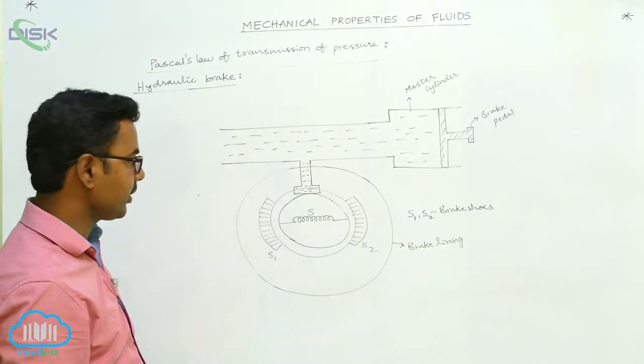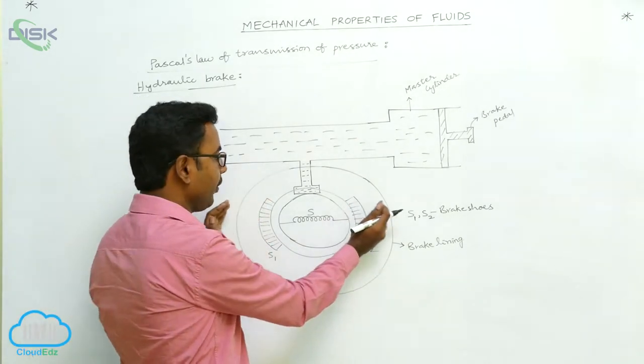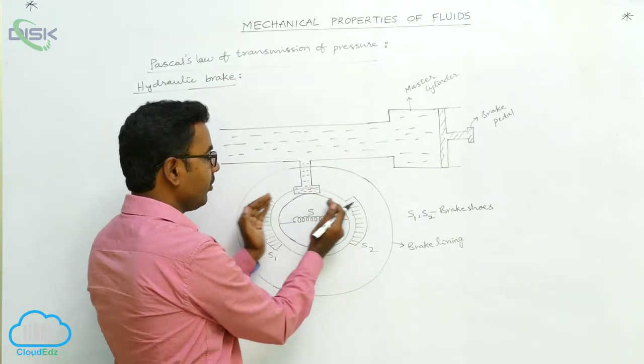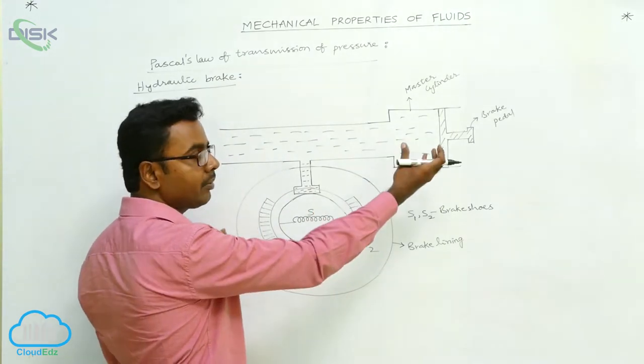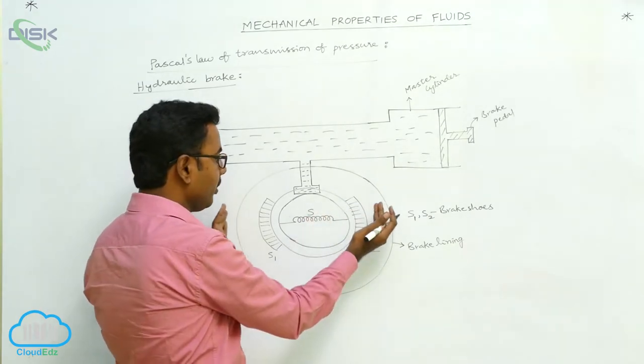Whenever S1 and S2 are pushed away, the spring S is elongated. When the brake pedal is released, the spring S comes back and brings S1 and S2 back to their original positions.